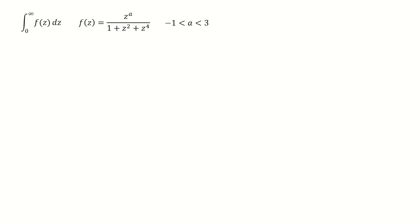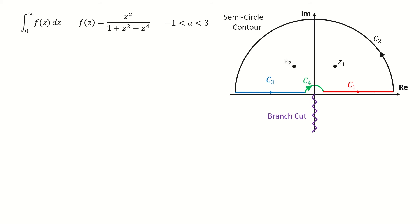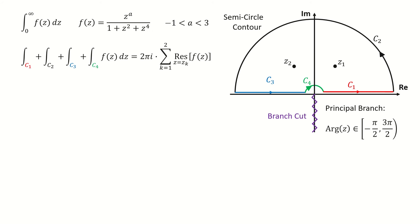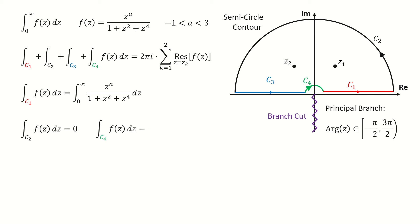Now let's look at this integral. First, we draw this semicircle contour here. This contour includes four parts: c1, c2, c3, and c4. Then we take a branch cut on the negative imaginary axis, and we choose a principal branch from negative pi over 2 to 3 pi over 2. From the Cauchy residue theorem, we can write this contour integral in this form. For the integral on c1, we can write it this way. For the integrals on c2 and c4, by doing some analysis we can show both of them are zero, and I list the key results here.